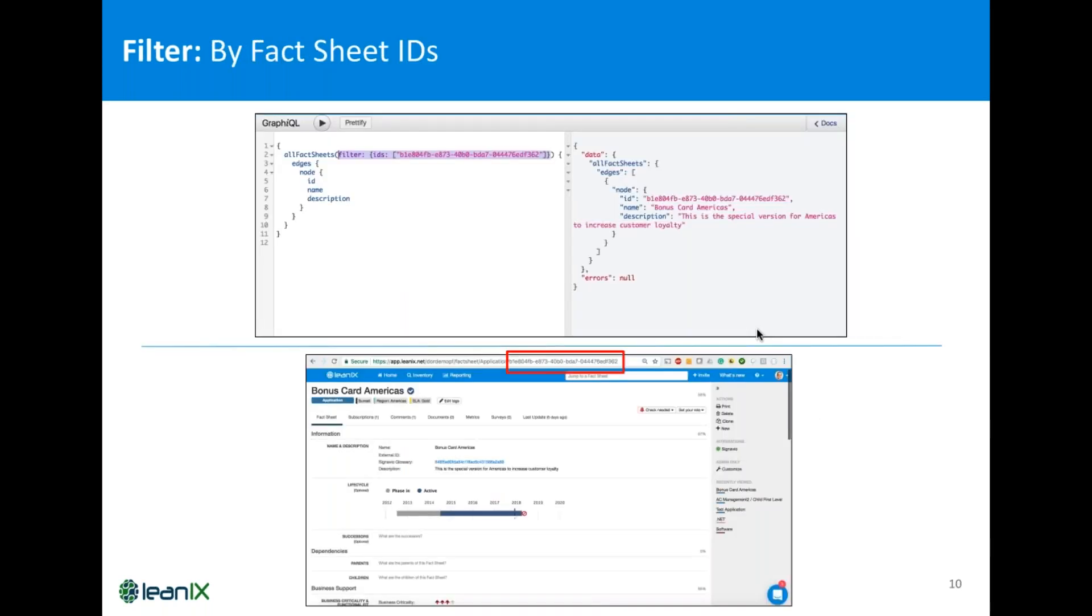So, the easiest one for sure is to filter by ID. Given you have one or a list of Factsheet IDs at hand, which you know you can find for example in the LeanIX URL but also in the table view when you want to deal with more than one Factsheet, you can just add those IDs as a filter and get the data precisely for those Factsheets.